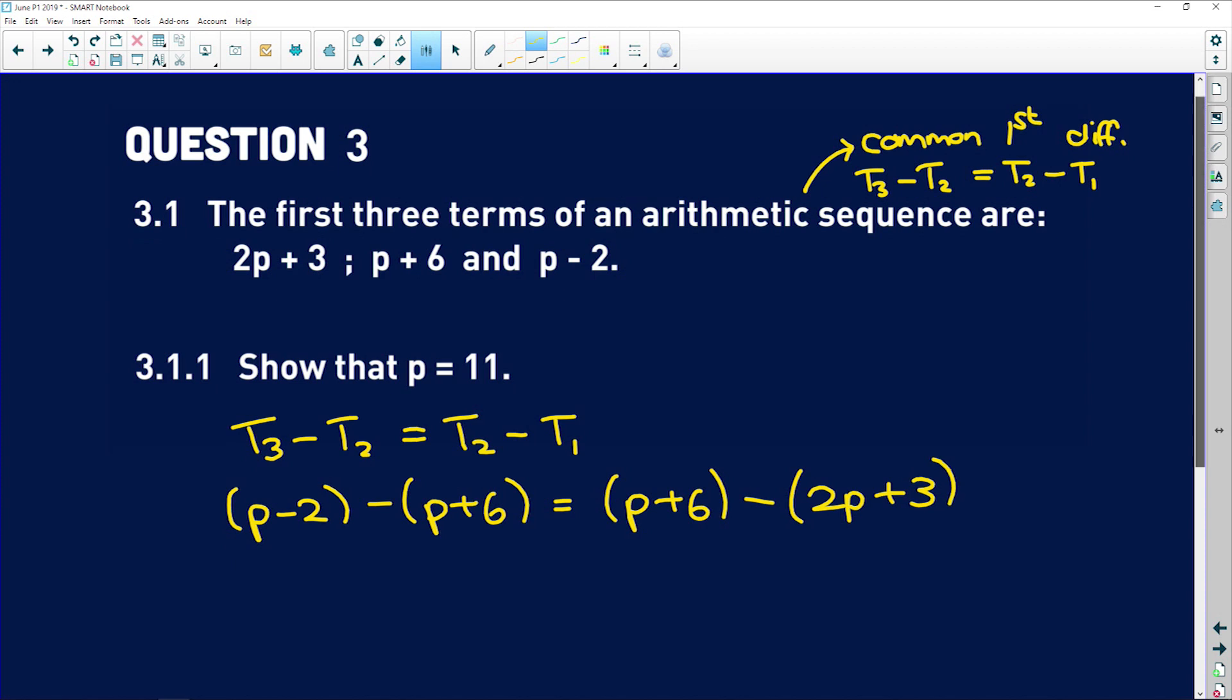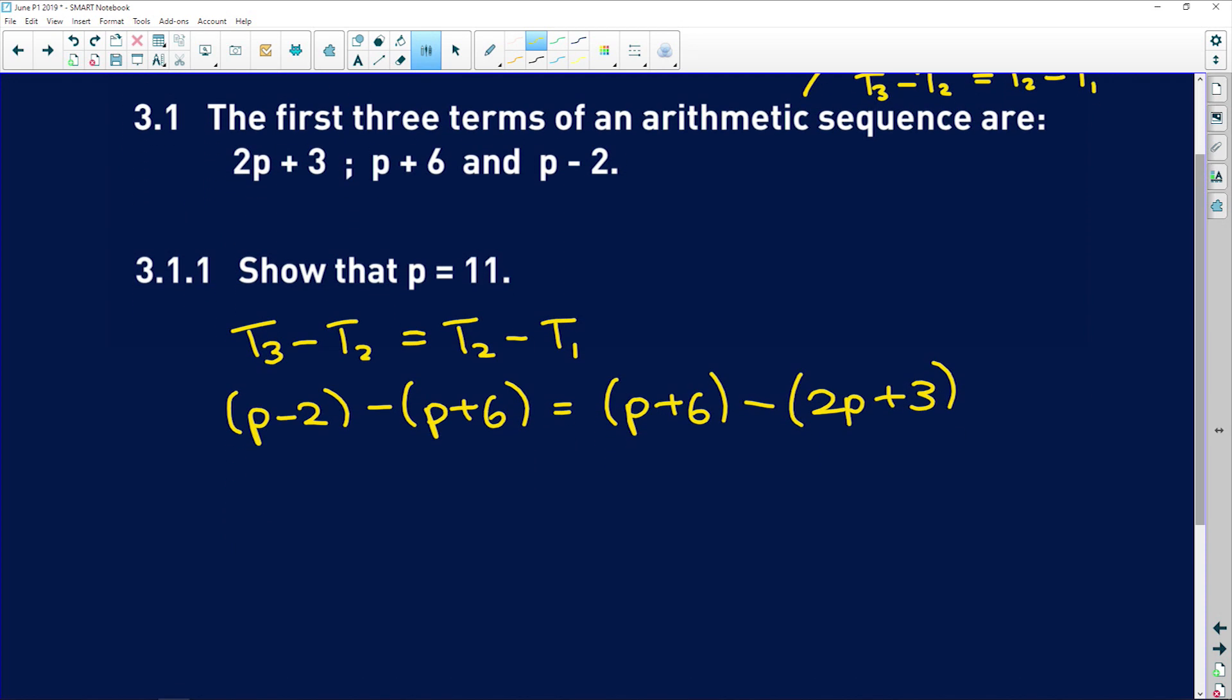Now we just need to solve for p. So on the left-hand side, p minus p is 0, and negative 2 minus 6 is going to give me negative 8. On the right-hand side, p minus 2p is going to give me negative p, and 6 minus 3 is going to give me positive 3.